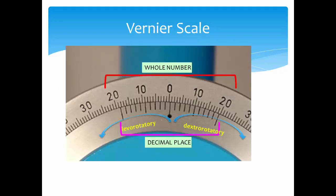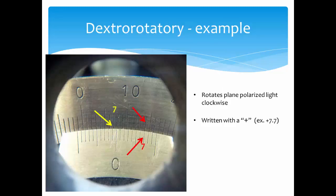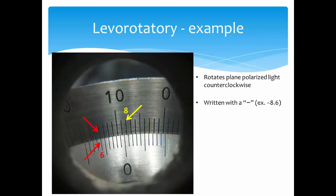The polarimeter uses a vernier scale. Dextrorotatory compounds rotate plane polarized light clockwise. As such, they are written with a positive. Levorotatory compounds, however, rotate with a minus.